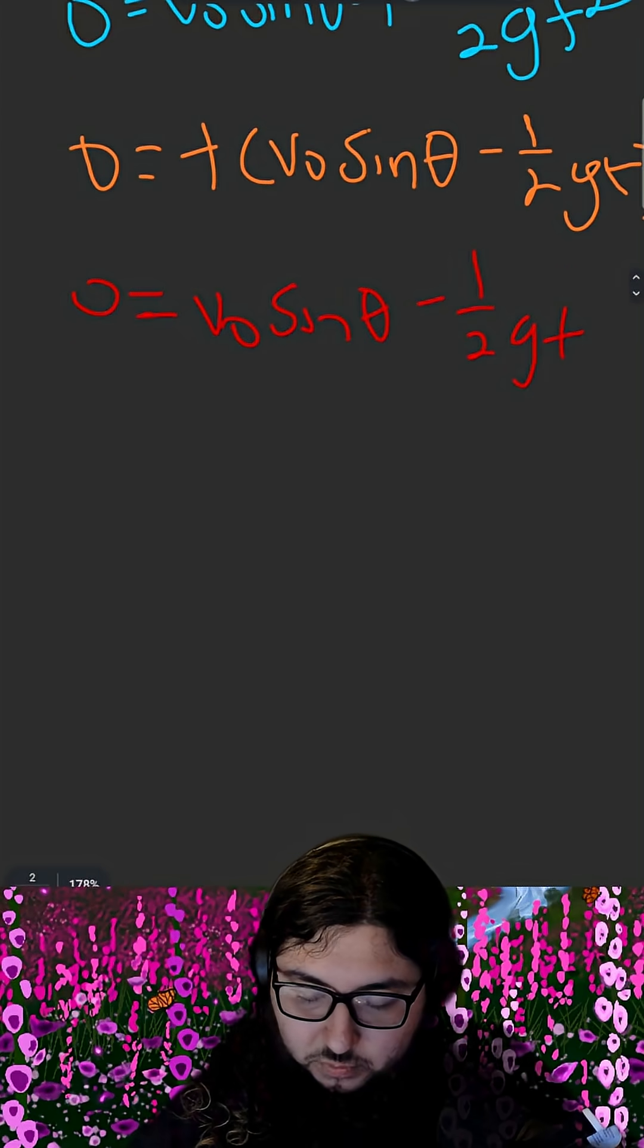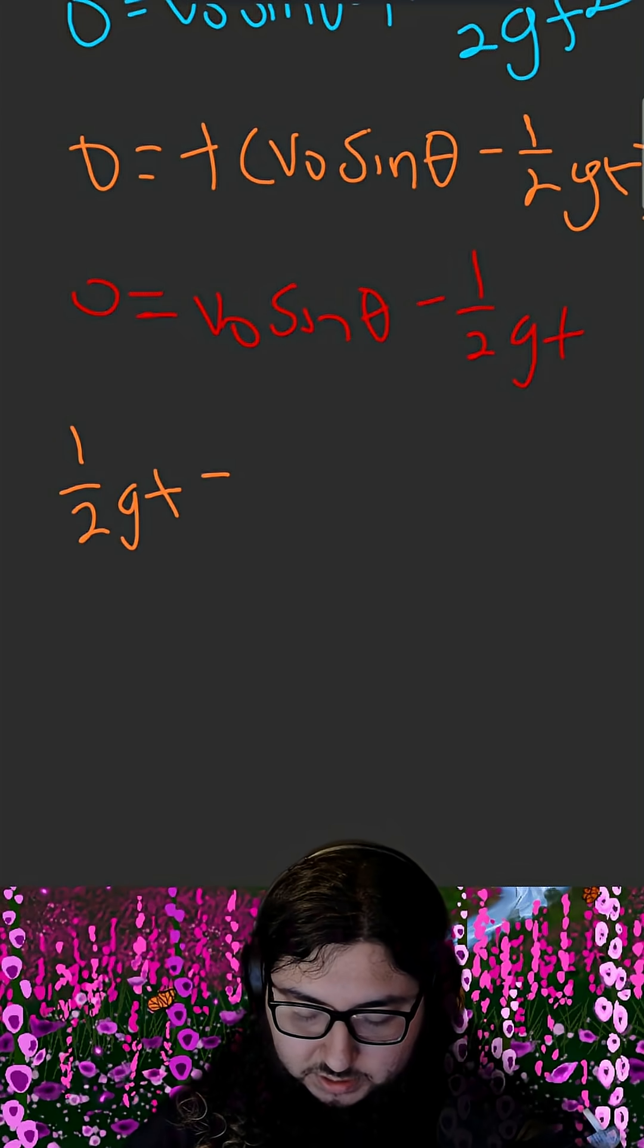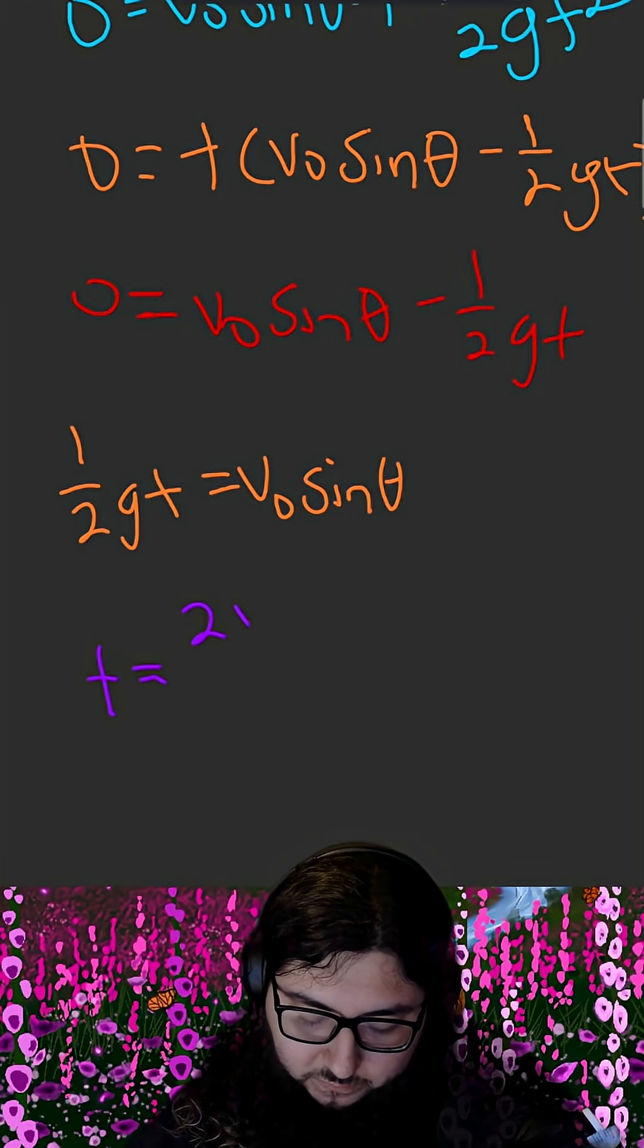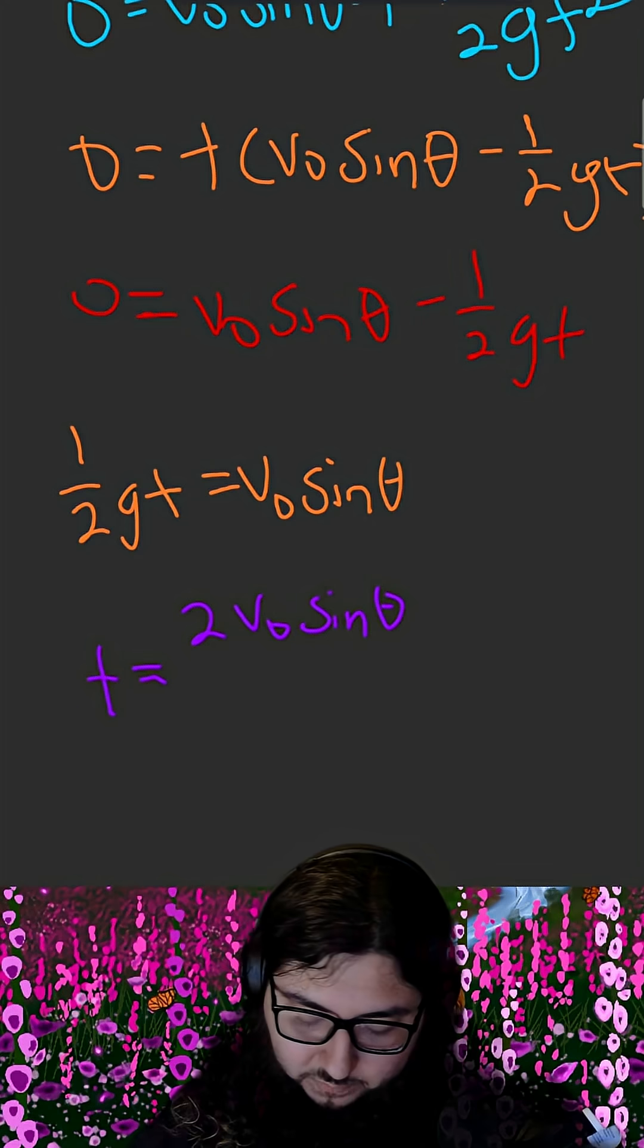Solving for t becomes a lot simpler this way. We get 1 half g t is equal to v naught sine of theta. Finally, t is equal to 2 v naught sine of theta divided by g.